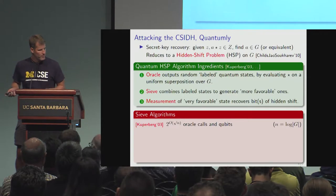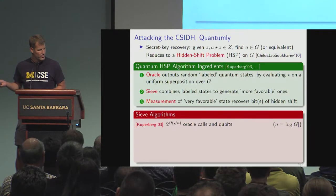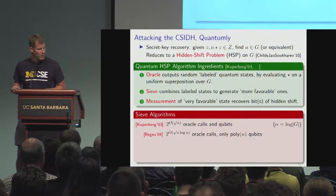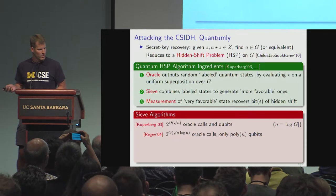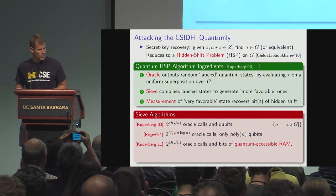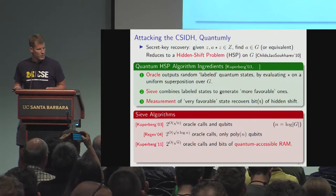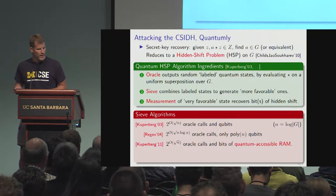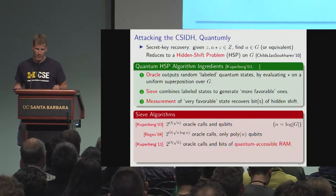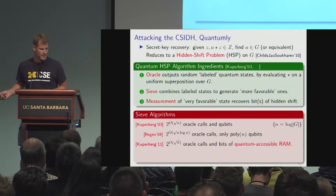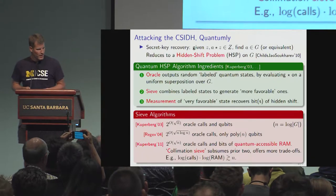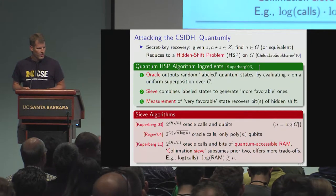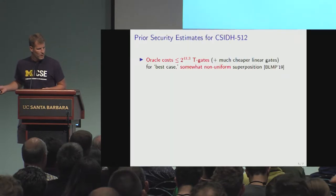There are three classes of sieve algorithms. The first is Kuperberg's original, which gives you 2 to the order root-n oracle calls and qubits. Regev improved the amount of space down to polynomial, but increased the number of oracle calls required. Then Kuperberg gave a follow-up algorithm which gets you back to 2 to the order root-n oracle calls and classical bits of RAM, which is quantumly accessible — meaning you can query it in superposition even though the RAM is holding classical bits. Kuperberg called this the collimation sieve, or c-sieve for short, and it subsumes the prior two algorithms and offers more algorithmic trade-offs, which we will exploit.